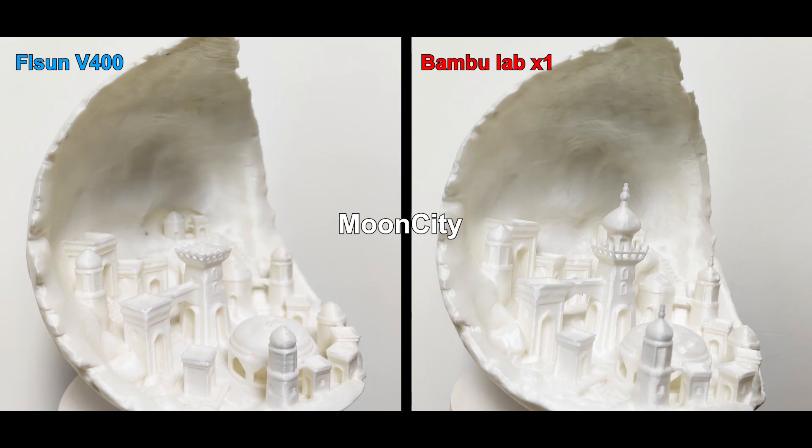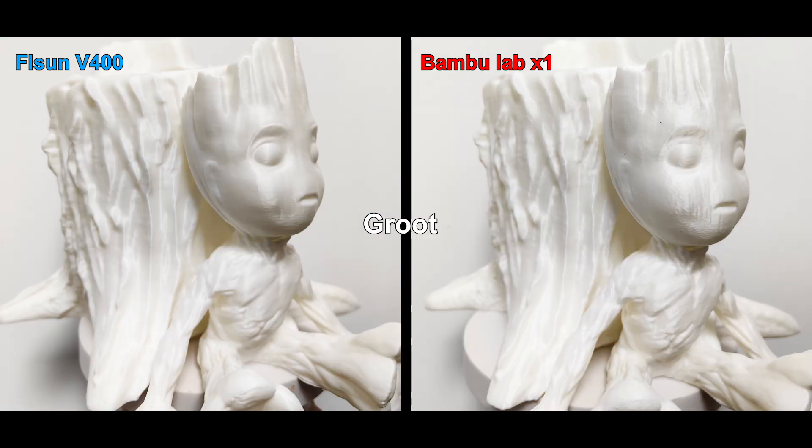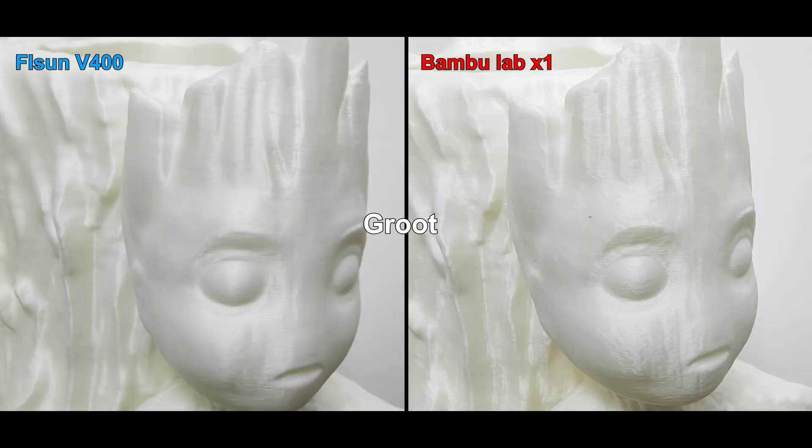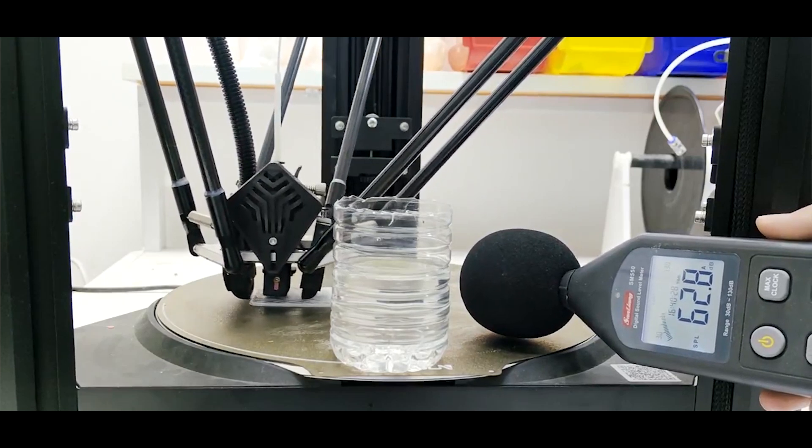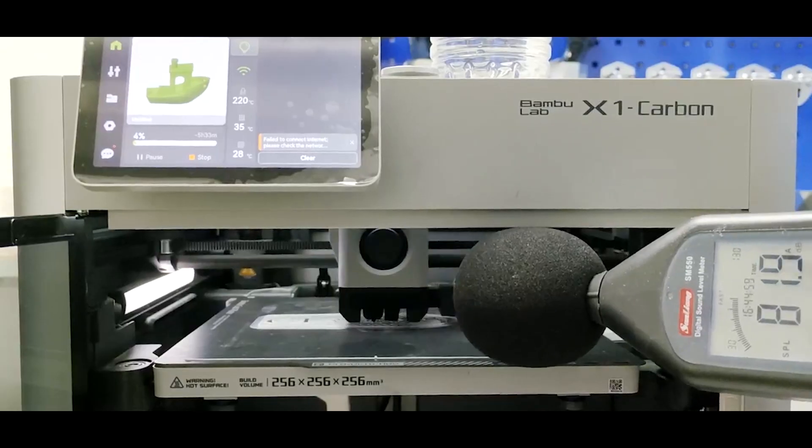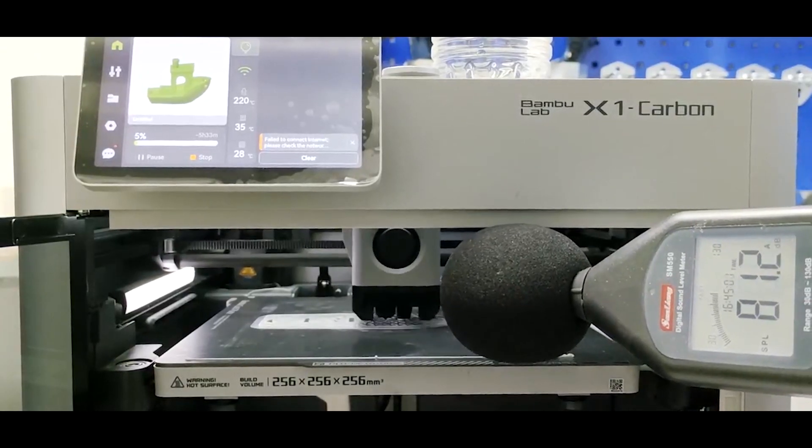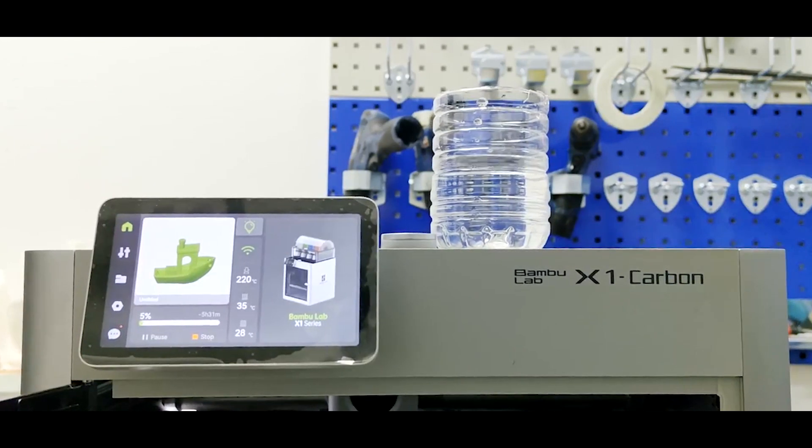In general, there's not much difference between the quality of the models made by them, and the effect presented by the level of smoothness has its own advantages and disadvantages, which can be adjusted according to your preferences. During the printing, I tested the noise level. The V400 remained at 65 to 70 decibels, and the X1 hovered between 78 and 82 decibels, and exhibited stronger vibrations.